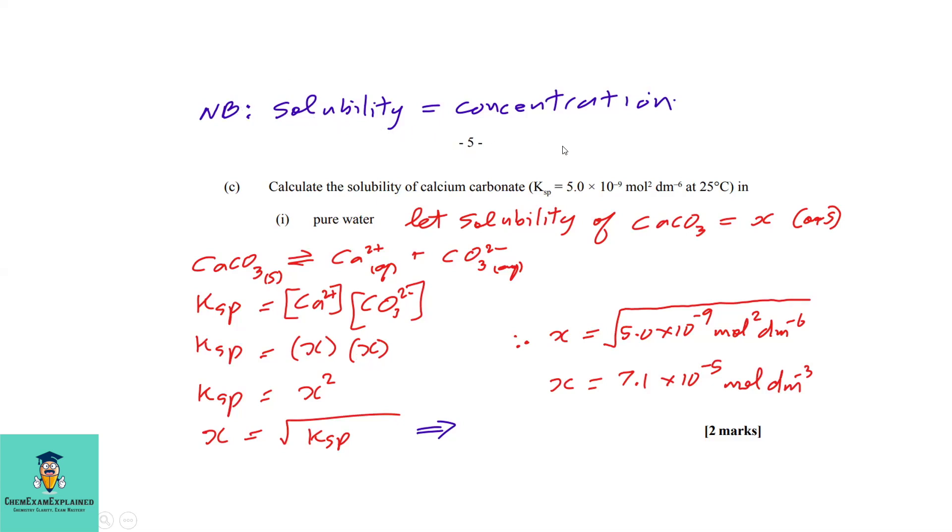Note that the solubility is the same as the concentration, so the solubility can be in moles per dm³ or grams per dm³. Looking at the equation, calcium carbonate produces calcium ions and carbonate ions.